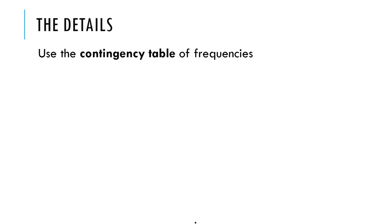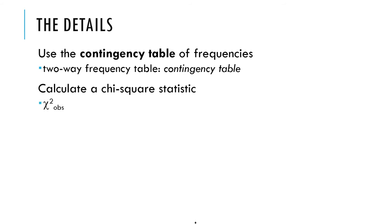We use this contingency table of frequencies, a two-way frequency table, and we use that to calculate our chi-square statistic. We look in a chi-square table to figure out a critical value. We calculate degrees of freedom, which is super easy.